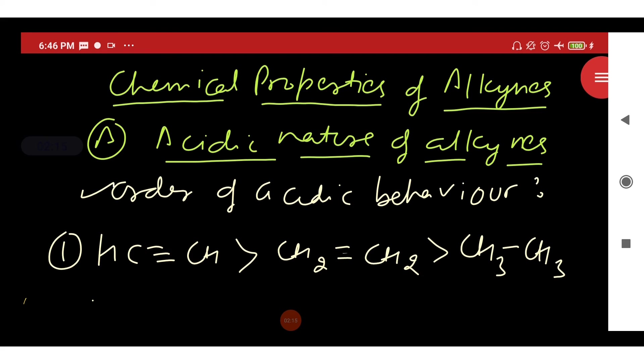Now here from the order of acidic behavior, it is clear that alkynes are more acidic and alkanes are least acidic.